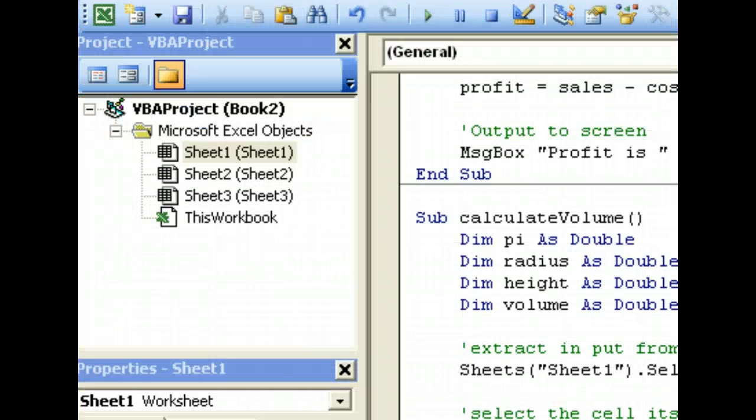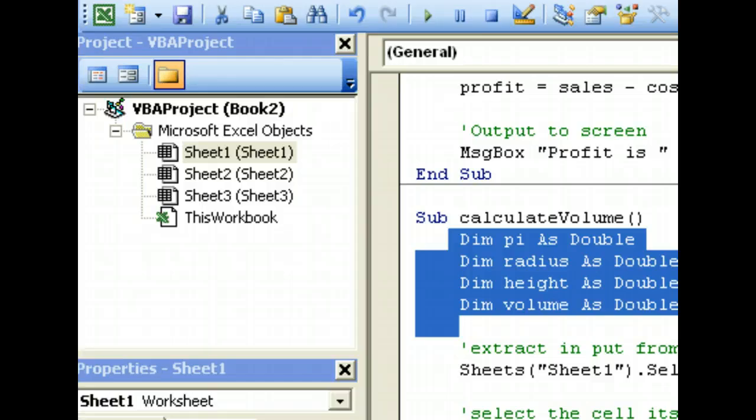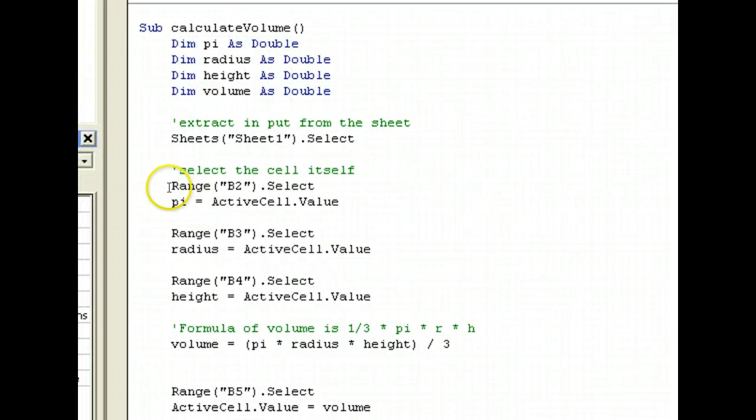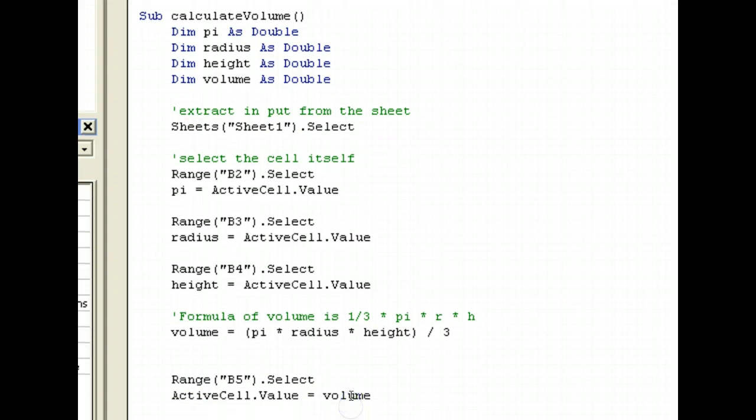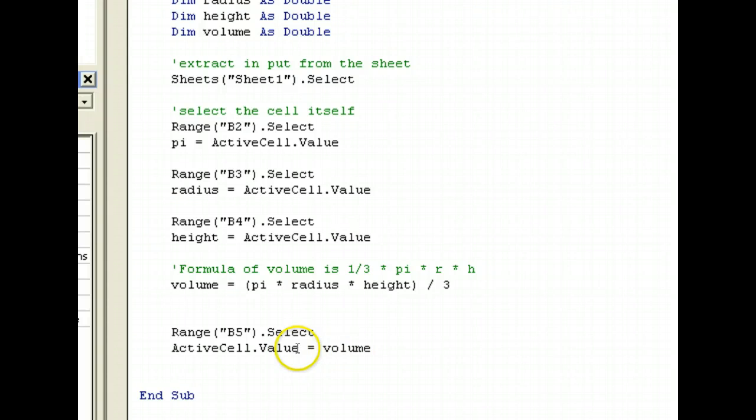To summarize, declare variables. Select the active sheet. Select the cell that we want to take user input from. Pi, radius, height, all to extract values from user input. Now, we calculate the volume formula. And now, we want to do output. We select the cell which we want to output and we assign the result to the cell that we want to output. So, it's from volume into the active cell. The rest from here is from active cell into the variable. So, I hope you can see the difference here.